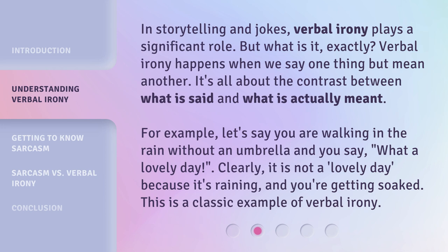In storytelling and jokes, verbal irony plays a significant role. But what is it, exactly? Verbal irony happens when we say one thing but mean another. It's all about the contrast between what is said and what is actually meant. For example, let's say you are walking in the rain without an umbrella and you say, 'What a lovely day!' Clearly, it is not a lovely day, because it's raining and you're getting soaked. This is a classic example of verbal irony.